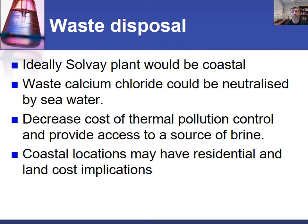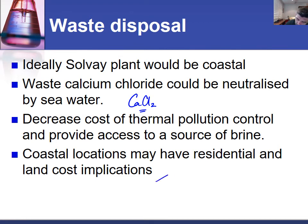Once we've produced and distributed our product, we need to know what we're going to do with the waste. Remember, calcium chloride is the waste product. This is solved by the Solvay plant being coastal — calcium chloride can be neutralized by seawater and pumped straight out. It also decreases the cost of thermal pollution because the ocean is such a large water body that it will absorb slightly warmer water, and of course it provides access to brine. This is one of the reasons why a lot of Solvay plants are located coastally, even though coastal property is usually more expensive and can raise residential implications.